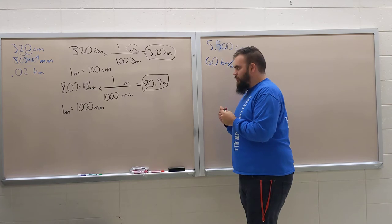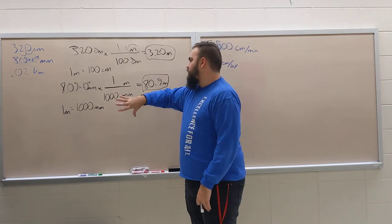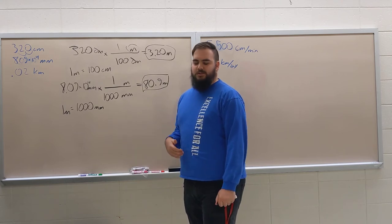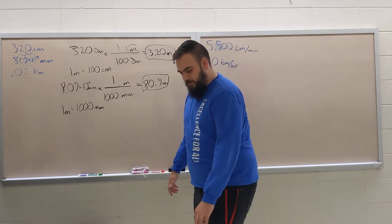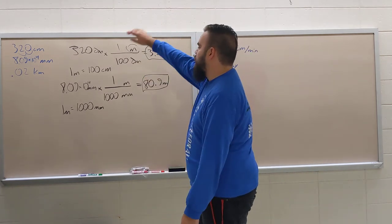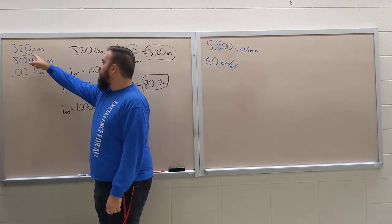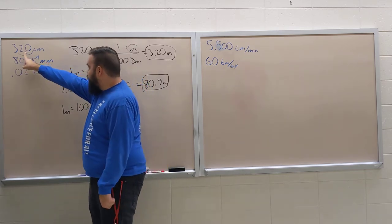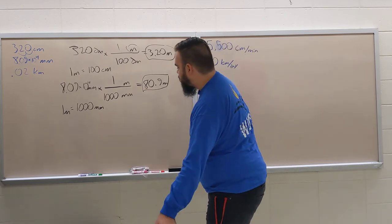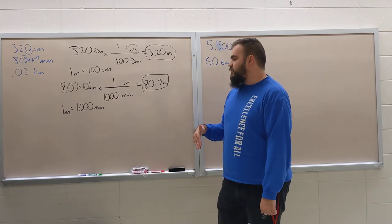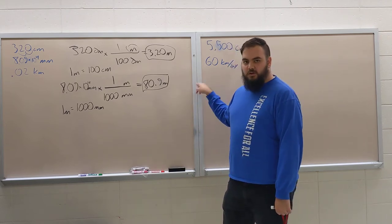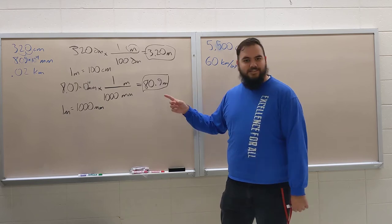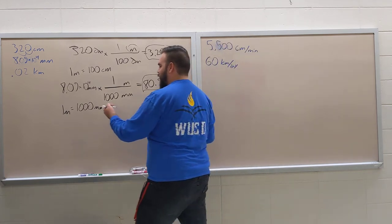Now before we move on, I want to say a few things. You don't have to do it this way. There's really two ways we can convert. One is a lot simpler, a lot easier, but it does require a little bit of memorization to make this go faster. When you're converting from centimeters to meters, all you have to do is move the decimal over two times to the left. That would give us 3.20 meters, and that's what our answer was. And when converting from millimeters to meters, all we have to do is move the decimal point over three times to the left.